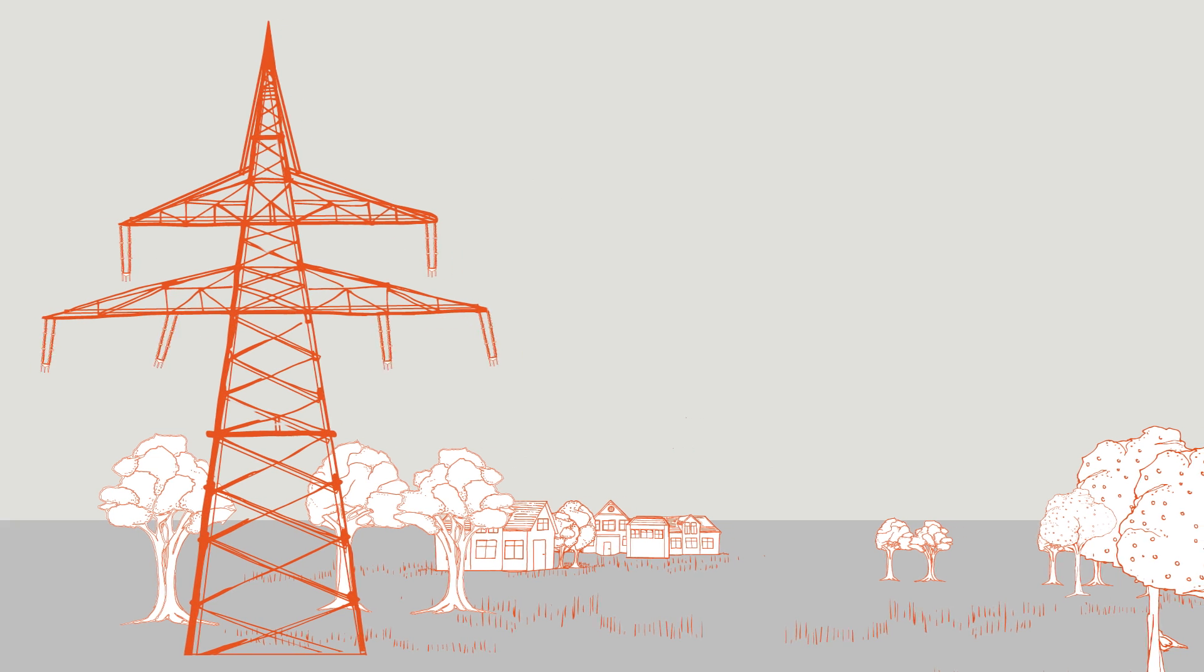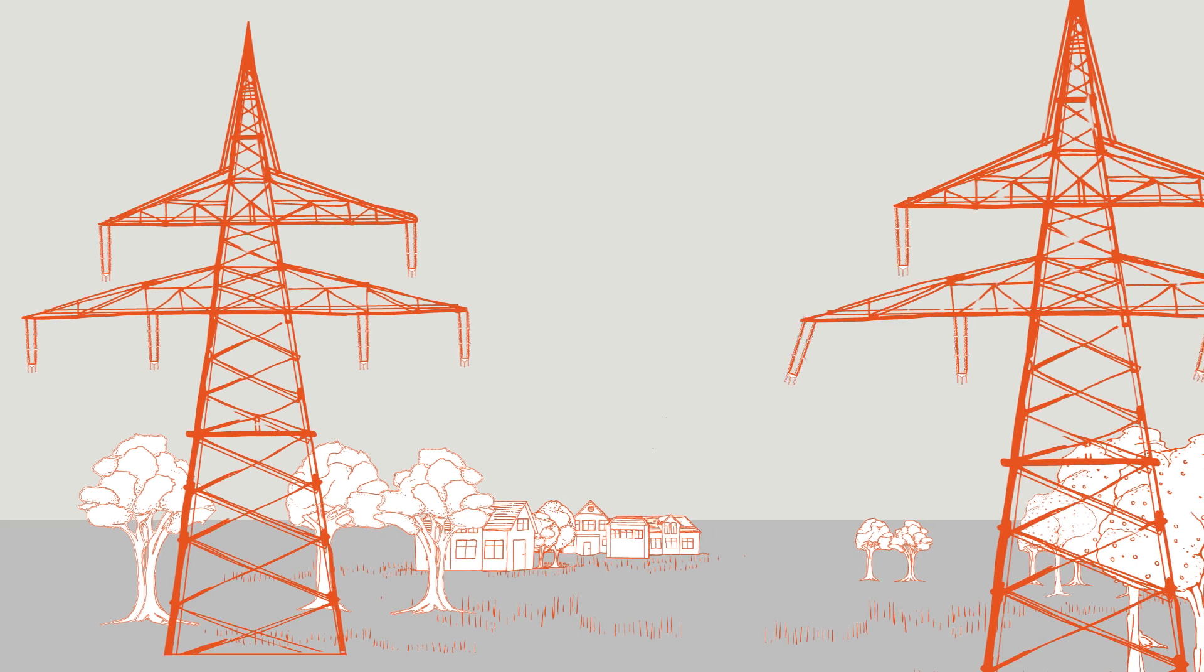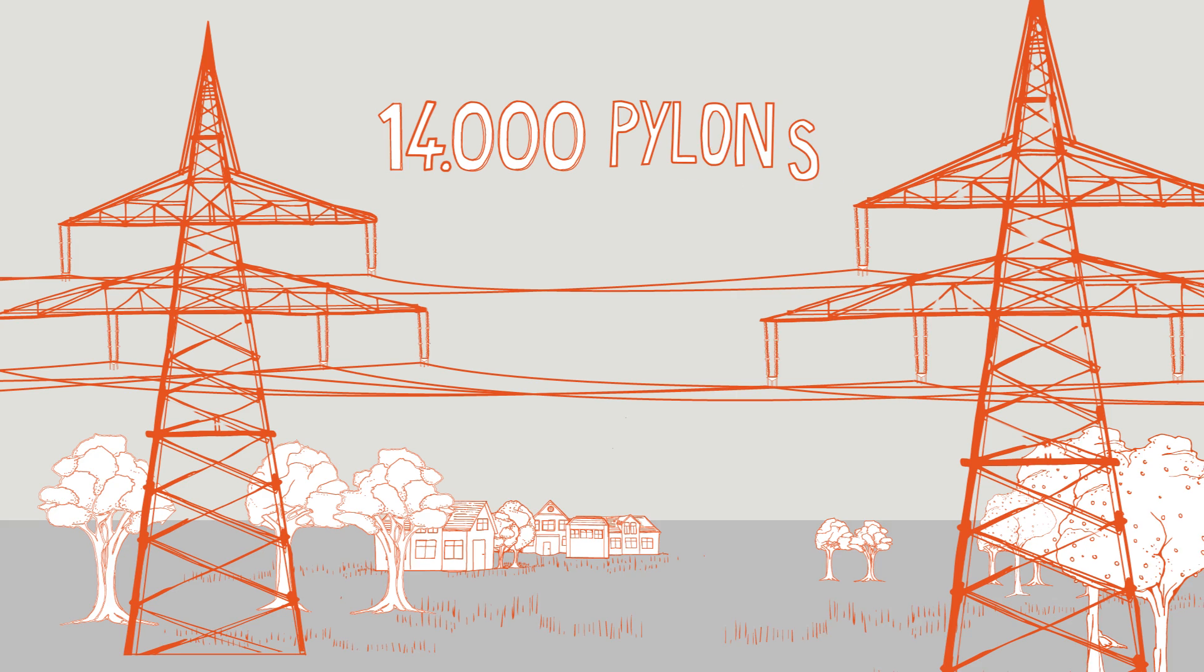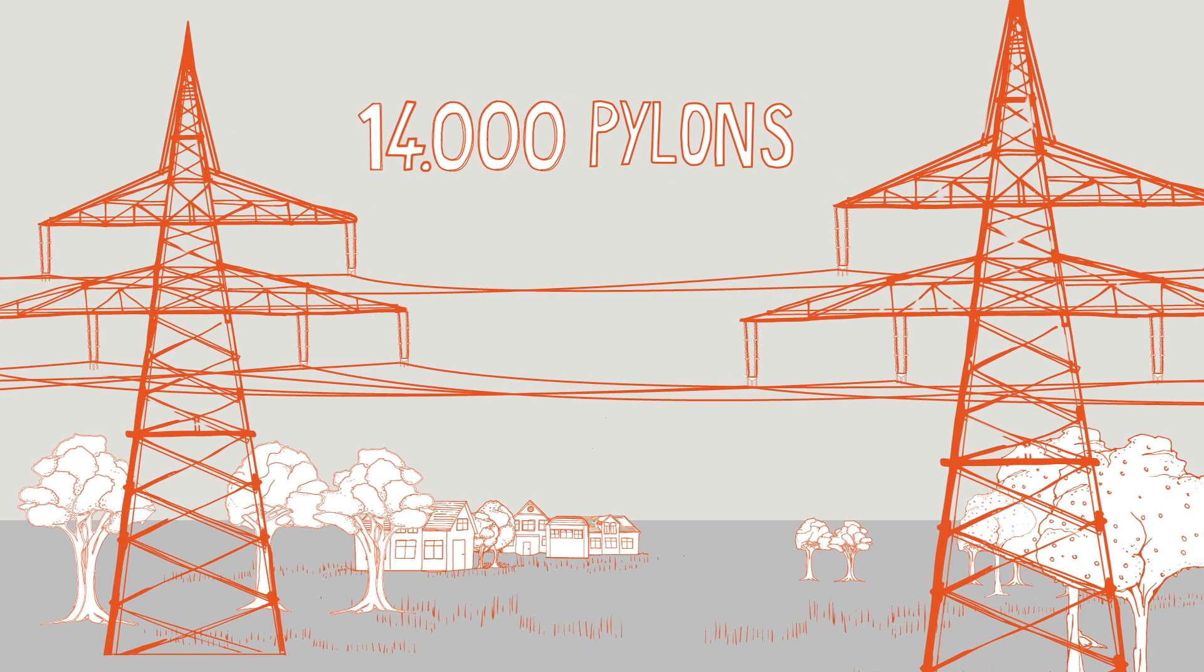One important element of overhead lines are the pylons. They carry the conductors. The 50 Hertz grid contains about 14,000 pylons.